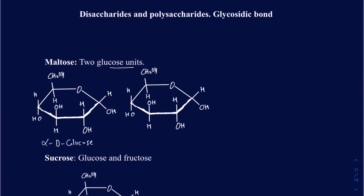So if I have another one here, and let's number these. This carbon is going to be called 1, 2, 3, 4, 5, and 6. And very similarly on the second one, it's going to be 1, 2, 3, 4, 5, and 6. What really happens is a condensation reaction where the two units combine together with a loss of water. The OH from the first unit, coming from the anomeric carbon, and the hydrogen from the second unit, combine together to lose the water, and then you connect the rest of the molecule.